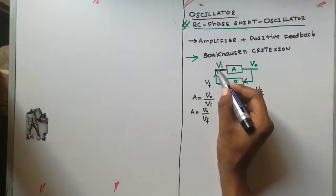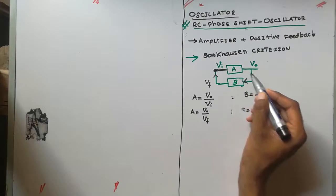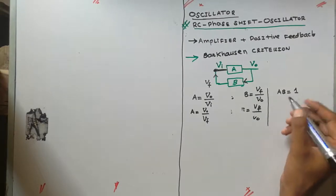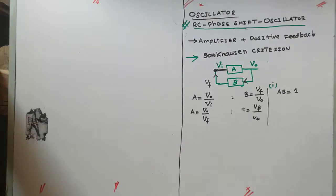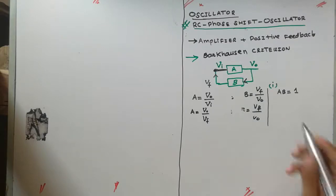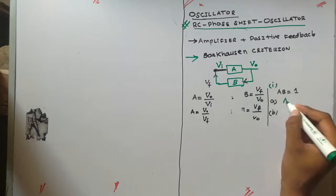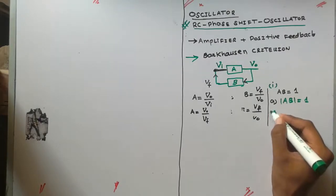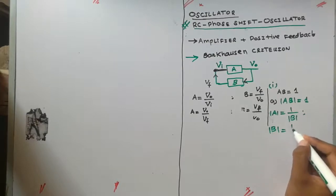According to the Barkhausen criterion, the loop gain — the gain from one point along the loop and back to that same point — equals the product A times B, and that product must equal one. Since A and B may be complex-valued functions with some phase difference, this condition splits into two parts. First, the magnitude of A times B must equal one, meaning the magnitude of A equals one over the magnitude of B.